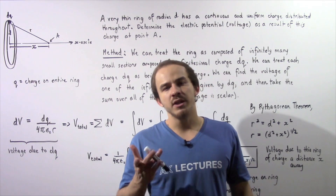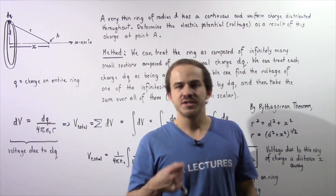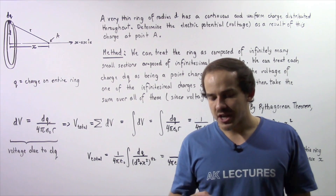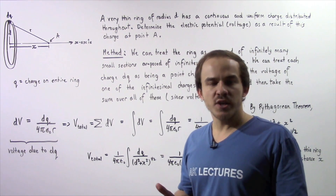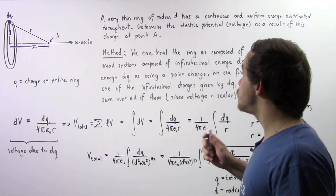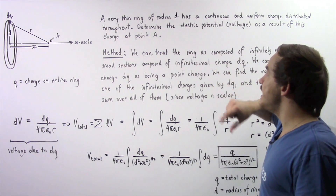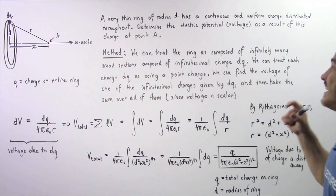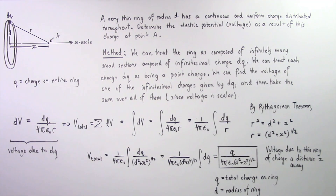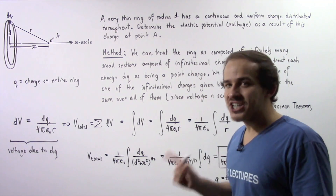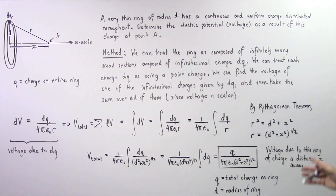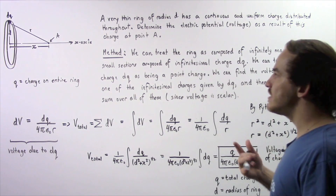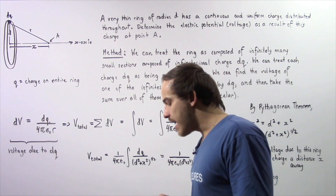Let's look at the following example in which we're going to calculate the voltage as a result of a ring of charge. We have a very thin ring of charge with a radius d, which has a continuous and uniform charge distributed throughout that ring. We want to determine the electric potential, the voltage as a result of this ring of charge at some point given by capital A.